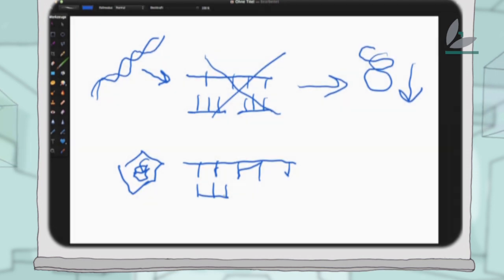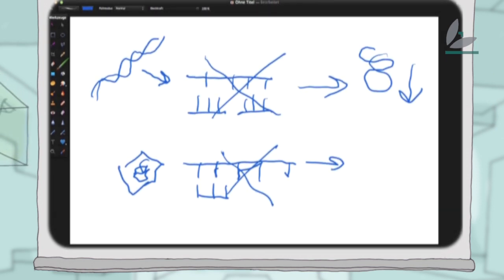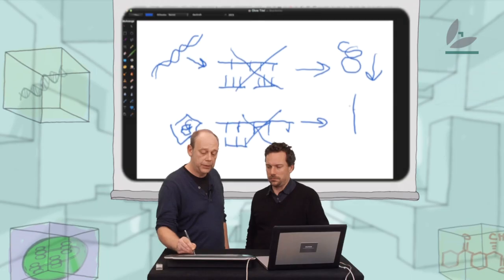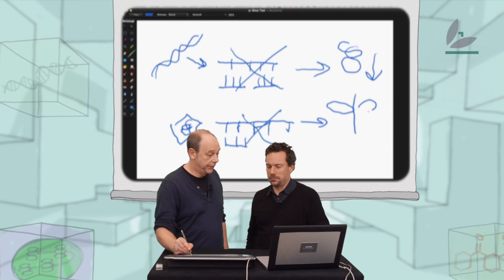This small RNA interacts with the viral RNA and the whole complex is degraded. So in a plant, this mechanism is used to gain resistance against the virus.